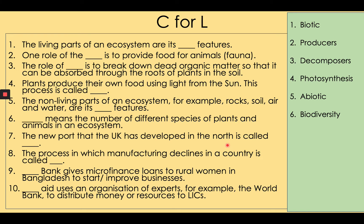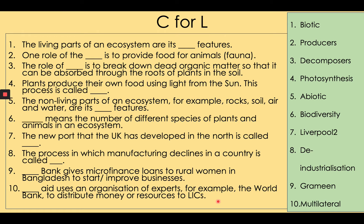See if your recall is as good. Seven: the new port that the UK has developed in the north is called Liverpool 2. Eight: the process in which manufacturing declines in a country is called deindustrialisation. Nine: Grameen Bank gives microfinance loans to rural women in Bangladesh to start or improve businesses. Ten: multilateral aid uses an organisation of experts, for example the World Bank, to distribute money or resources to LICs.